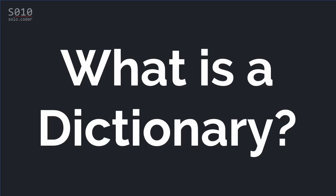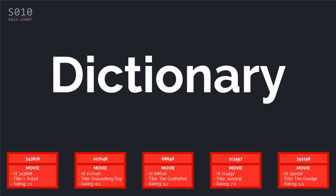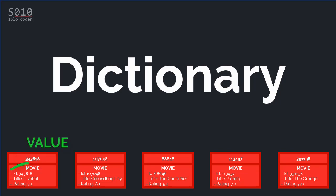A dictionary is a hash table with key-value pairs. It means that each item of a dictionary has two values. One is the key — in our case here, for the example of a movie, we have the movie ID as the key. And the other value is the value linked to the key — for this movie ID, this is the movie data stored there, the movie object.